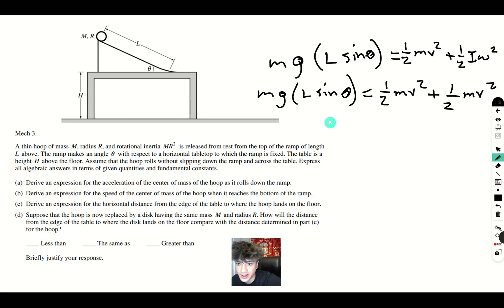So you get M G L sine theta is equal to M V squared. Cancel out the M's, and the speed is going to be square root of G L sine theta. There's your velocity.